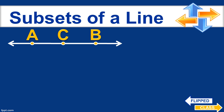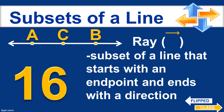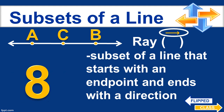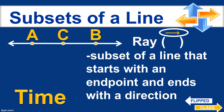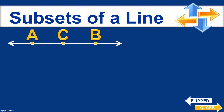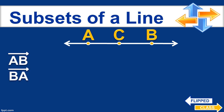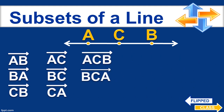The second subset of a line is called a ray, denoted with a single arrowhead notation. A ray is defined as a subset of a line that starts with an endpoint and ends with a direction. In 20 seconds, write as many rays as you can see in this figure. You could write ray AB, ray BA, ray CB, ray AC, ray BC, ray CA, ray ACB, and ray BCA — so there are eight rays.